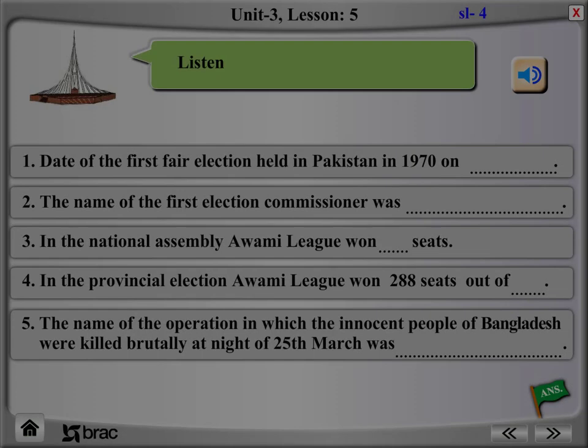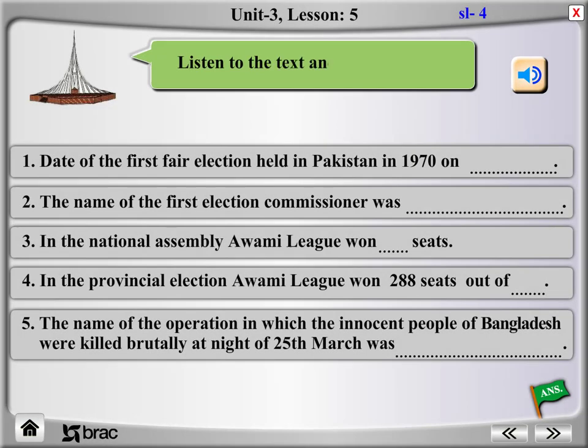Listen to the text and fill in the gaps. The first free general elections of Pakistan were held on 7th December 1970, although the polls were originally scheduled for October of that year.